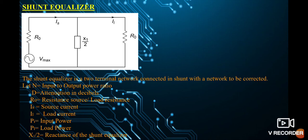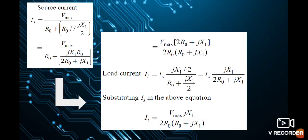The load current flows through R0 and jX1/2, so we add those two passive element values. Rearranging gives IL = Is · jX1 / (2R0 + jX1). Substituting Is into the equation, the load current becomes IL = Vmax · jX1 / (2R0 · (R0 + jX1)).